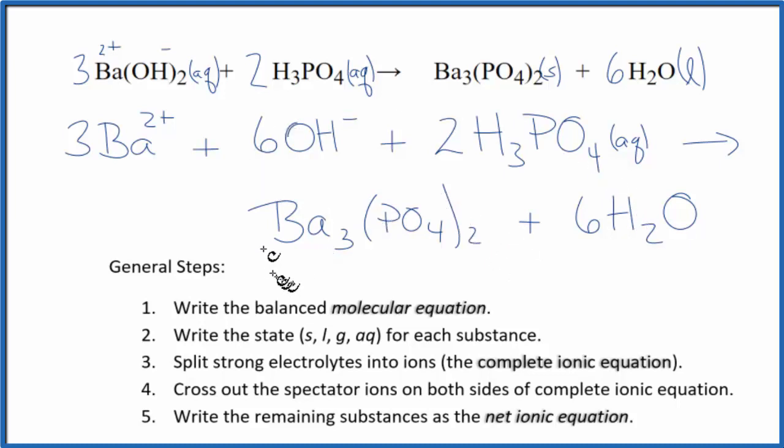Let me clean this up and add the states in for each one of these substances. And we'll have our net ionic equation for BaOH2 plus H3PO4.